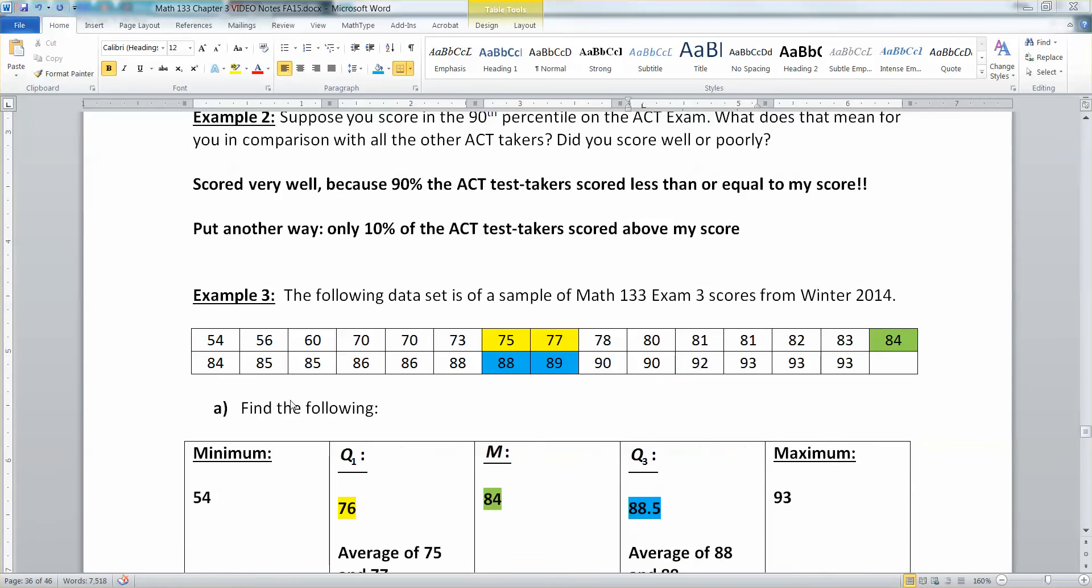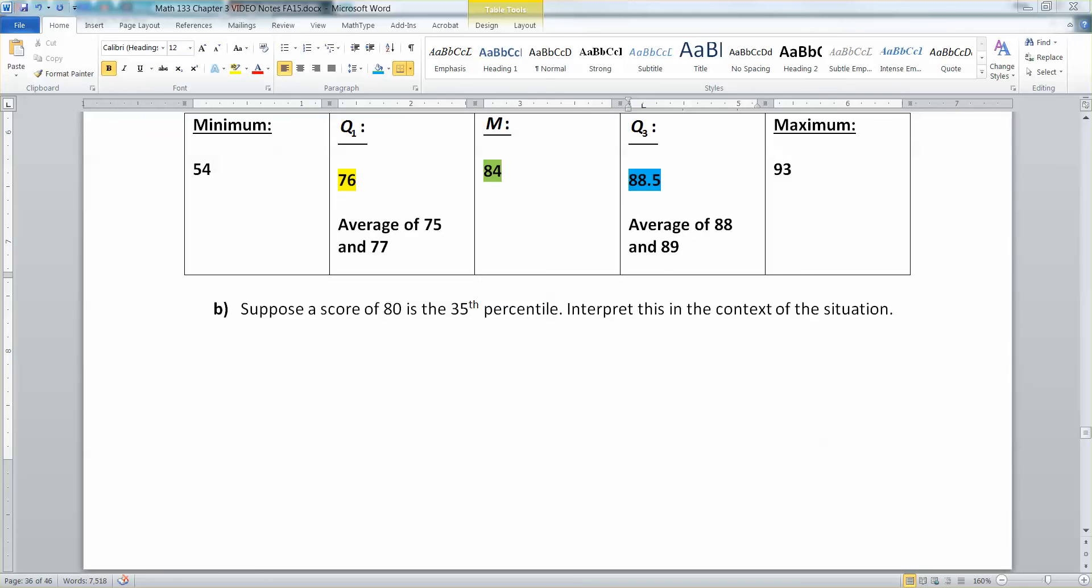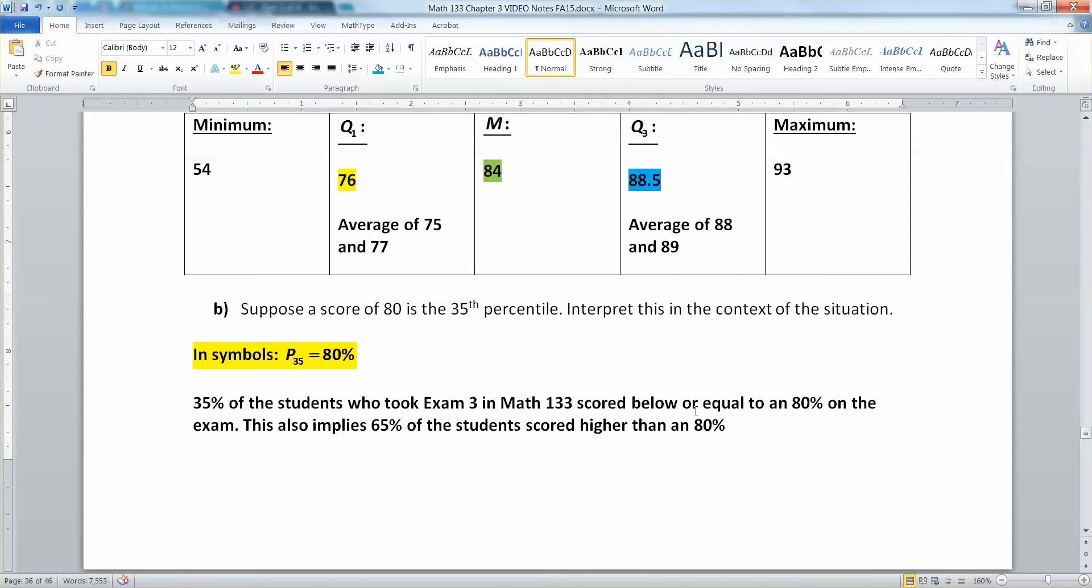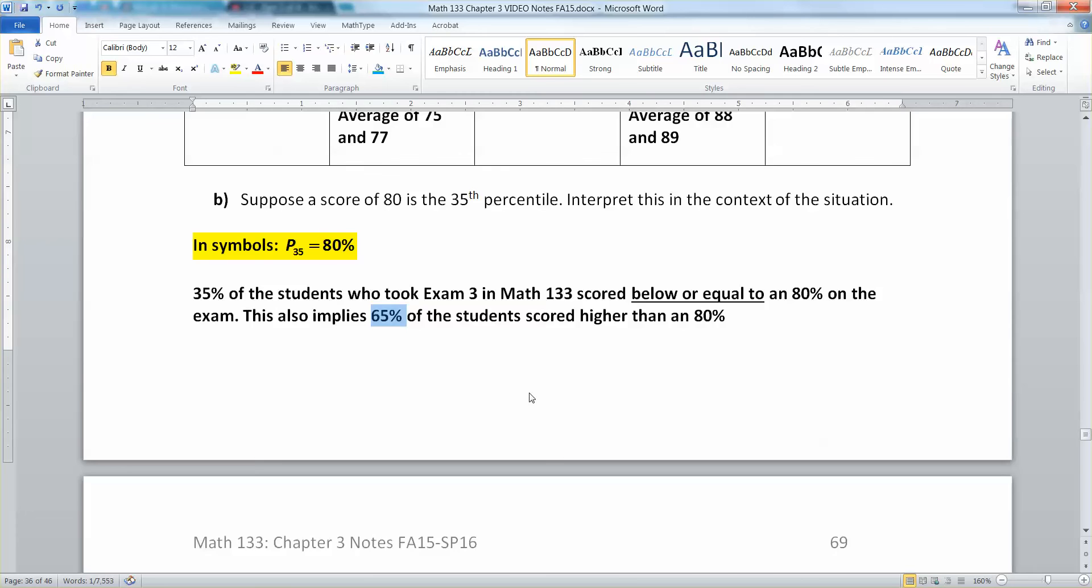Suppose a score of 80 is in the 35th percentile. What does that mean? Well, a couple of things. One, you can tell that in symbols, it's P35 is equal to 80%. That's what we're saying. So the 35th percentile, that's why it gets the little index of 35, is 80%. What that means is that 35% of the students who took that exam scored less than or equal to an 80%. And that also implies, by the way, this also implies that 65% of the students scored higher than an 80%. The part that students always screw up is the or equal to part. So it's below or equal to, and people often forget about the or equal to thing. Whereas this is just higher. So 35% is less than or equal to 80. And that means 65% of the students are higher than 80, which is really impressive when you think about it. I mean, an 80% is a good score, but 65% of the students scored above an 80. So they were an impressive bunch.